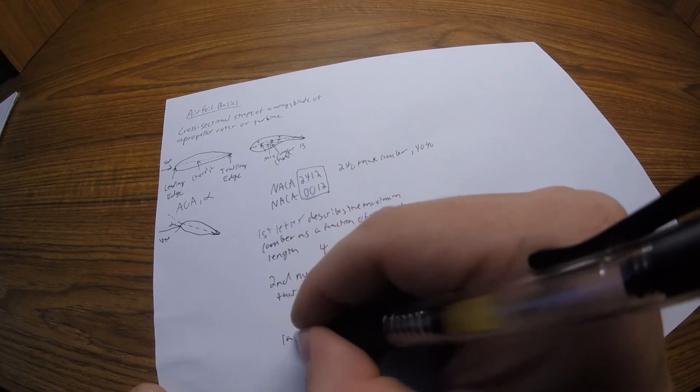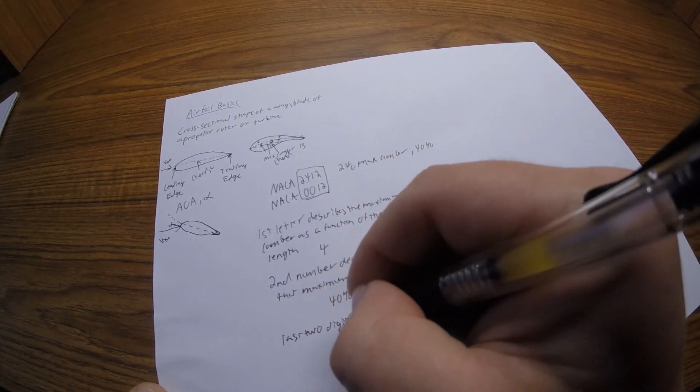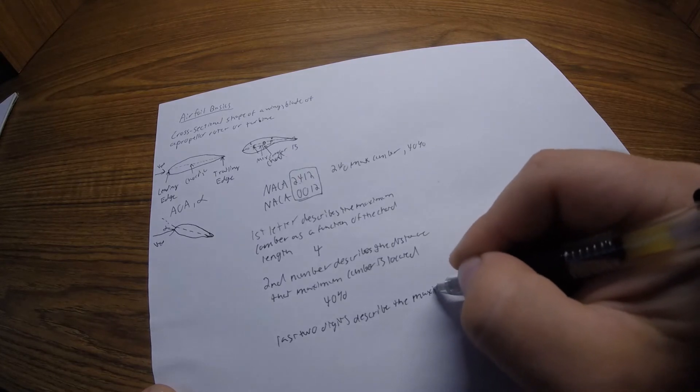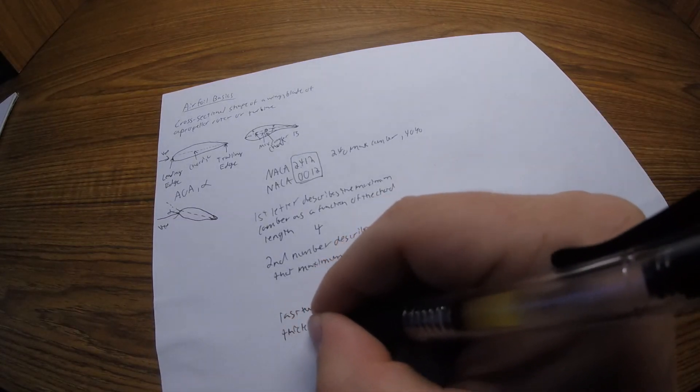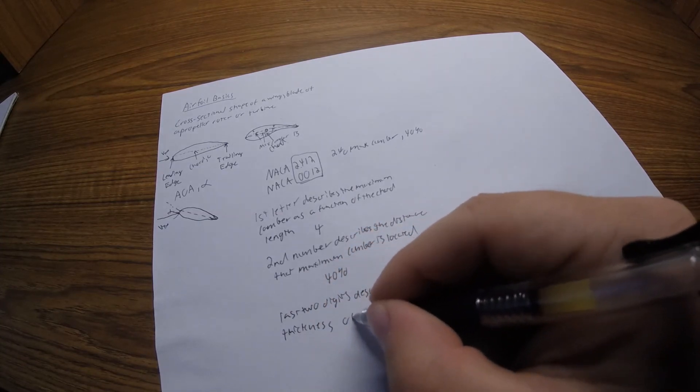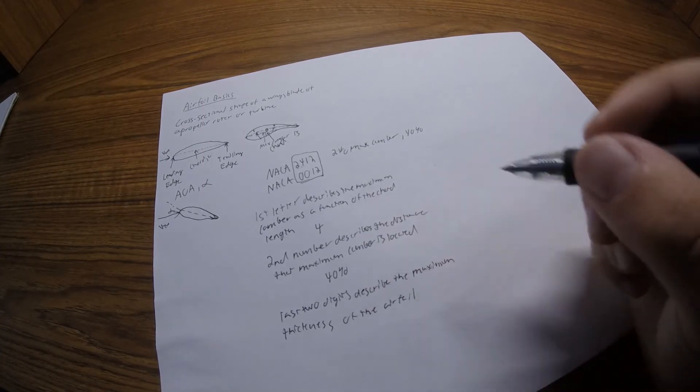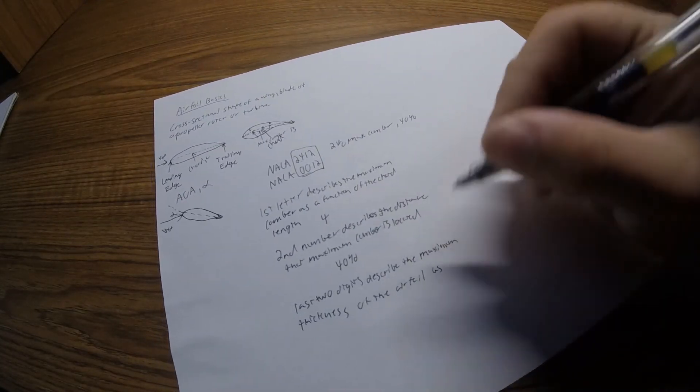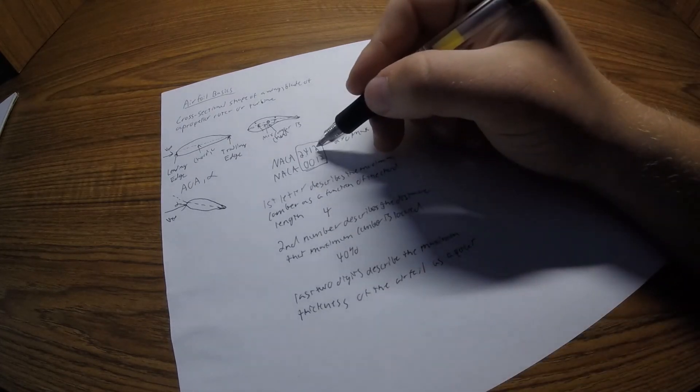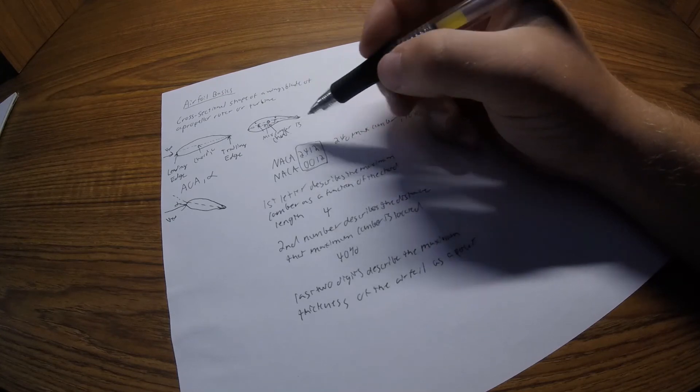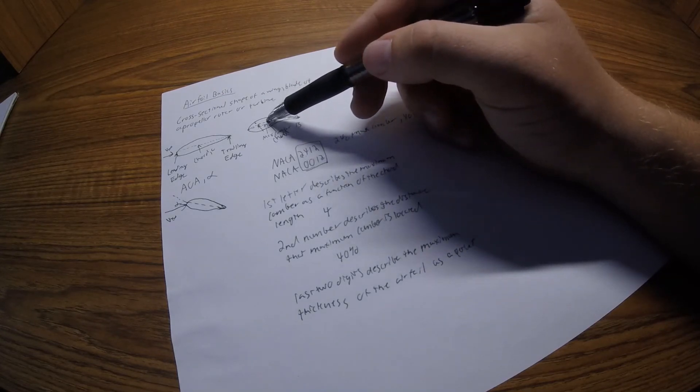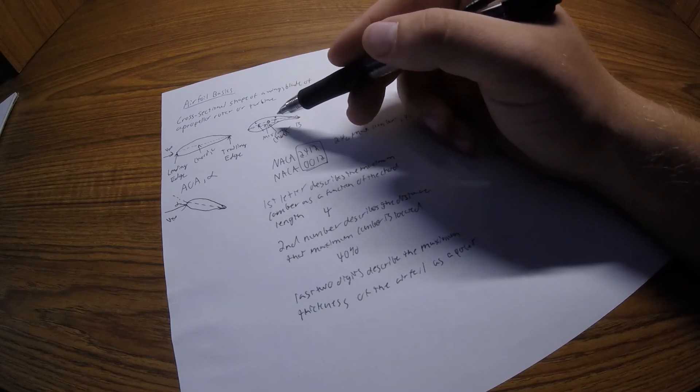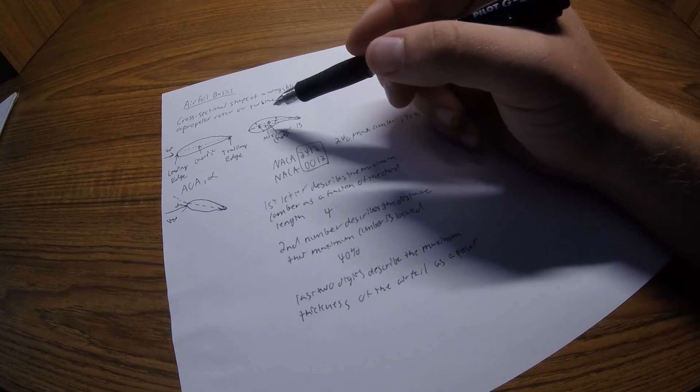And then the last two digits describe the maximum thickness of the airfoil. So no matter where the camber is, where the chord line is, this is as a percent. So if it's a 12, that means the maximum thickness of that wing is 12 percent of the chord. So if our chord is one meter long, the maximum thickness of that airfoil is 12 centimeters, or 12 percent of one.